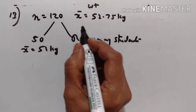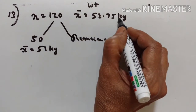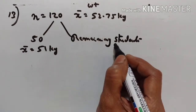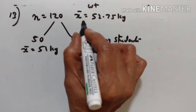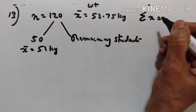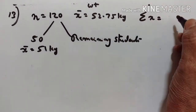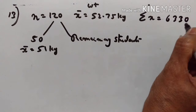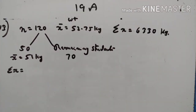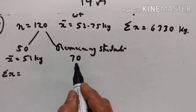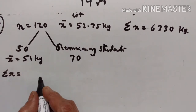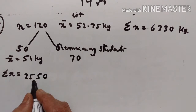13th problem: the mean weight of 120 students is 52.75 kg. If the mean weight of 50 of them is 51 kg, find the mean weight of the remaining students. Total students: 120, mean 52.75, so sum of all weights is 120 times 52.75, which gives 6330 kg. Remaining students: 120 minus 50 equals 70. Sum of weights of 50 students is 50 times 51, that is 2550 kg.